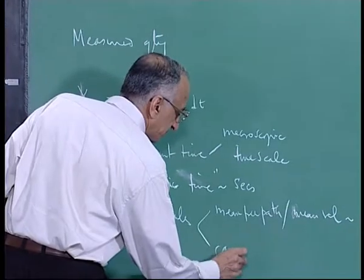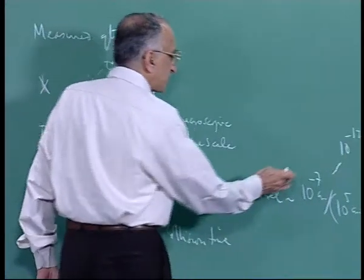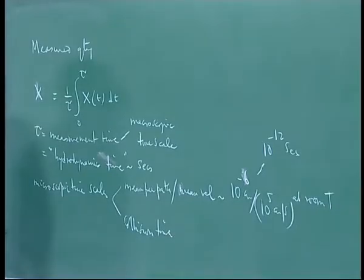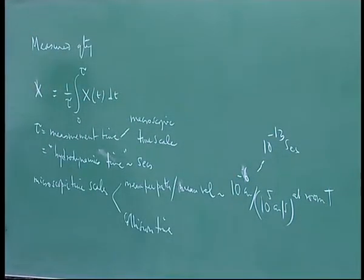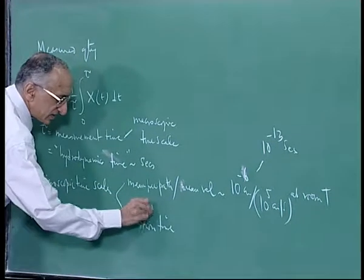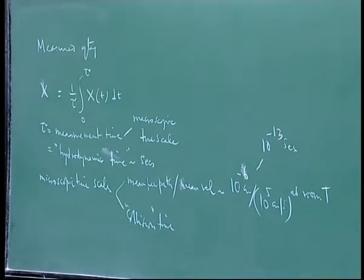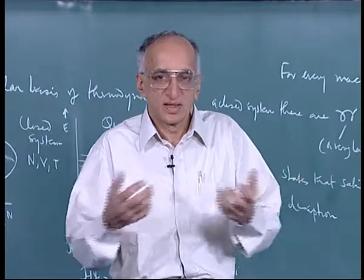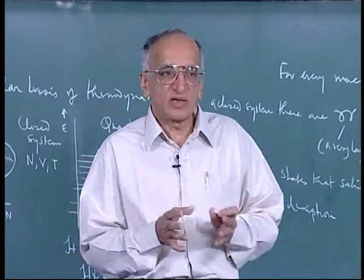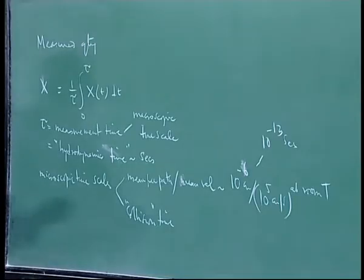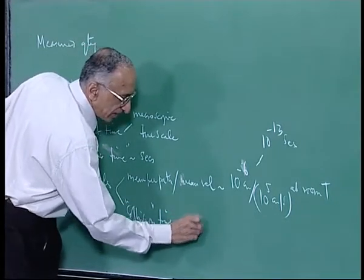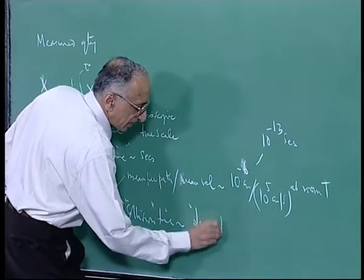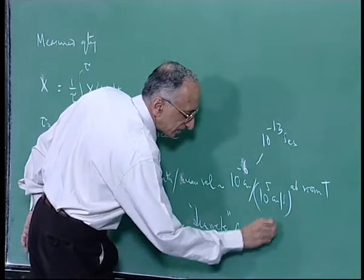Then you talk of collision time. The collision time is the time during which two molecules are aware of each other's presence — when there is a force between them. Typically if the molecules go beyond a certain distance, one molecule does not know the other exists. These are van der Waals forces between two molecules, and the collision time will be of the order of the molecular diameter divided by velocity.